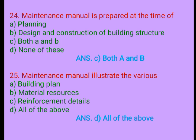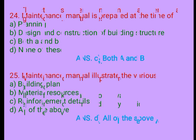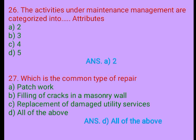Question 25. Maintenance manual illustrates the various: A. Building planning, B. Material resources, C. Reinforcement details, D. All of the above. Answer: D. All of the above. Question 26. The activities under maintenance management are categorized into how many abilities? A. 2, B. 3, C. 4, D. 5. Answer: A. 2.